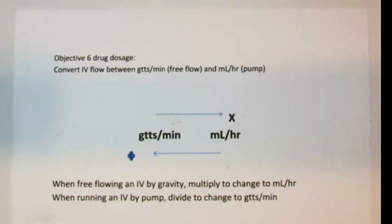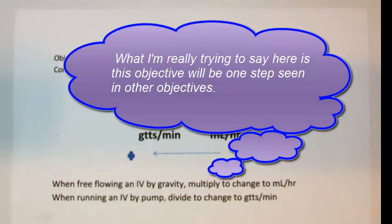The step in Objective 6 involves alternating doses between drops per minute, or that free flow by gravity, and milliliters per hour, which is IV flow by pump or infuser. What you will notice is that the step learned in Objective 6 of alternating between free flow and pump is simply one part in the other processes for the other objectives.